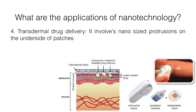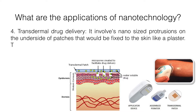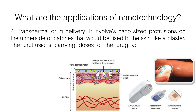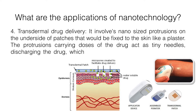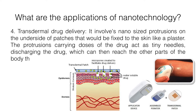Transdermal drug delivery involves nano-sized protrusions on the underside of patches that are fixed to the skin like plasters. The protrusions carry doses of drugs and act as tiny needles, discharging the drugs which can then reach other parts of the body through tissue fluids.